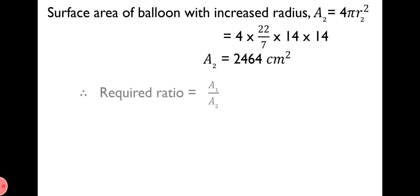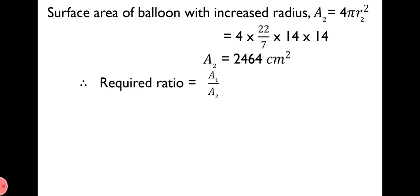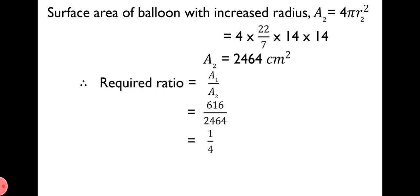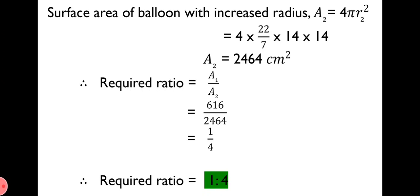Now, the required ratio is equal to A1 upon A2, that is, surface area of balloon with initial radius upon surface area of balloon with increased radius. That is equal to 616 upon 2464, which on solving gives 1 upon 4. Therefore, the required ratio is 1:4.